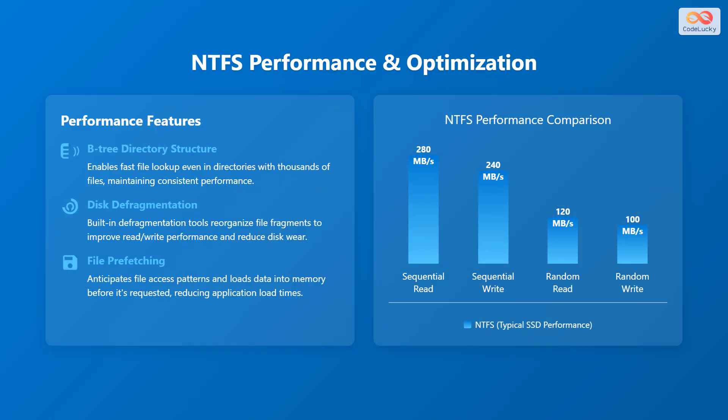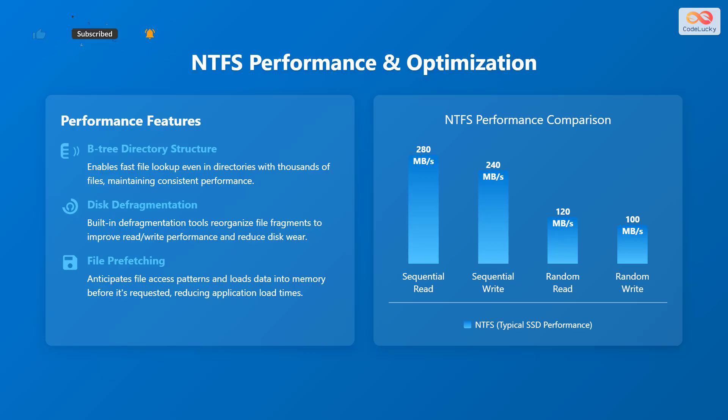The performance and optimization features of NTFS include: the B-tree directory structure, which enables fast file lookup even in directories with thousands of files, maintaining consistent performance. Disk defragmentation uses built-in tools to reorganize file fragments to improve read/write performance and reduce disk wear. File prefetching anticipates file access patterns and loads data into memory before it is requested, reducing application load times.